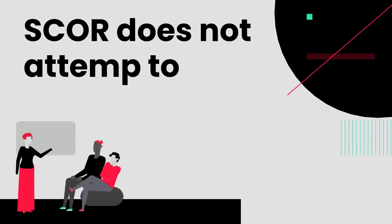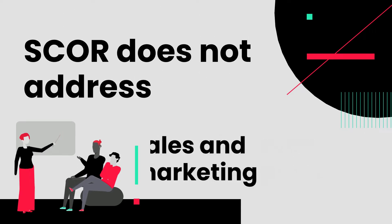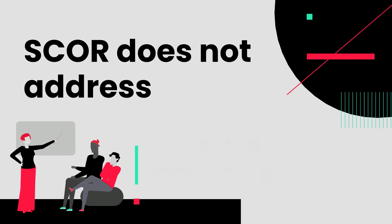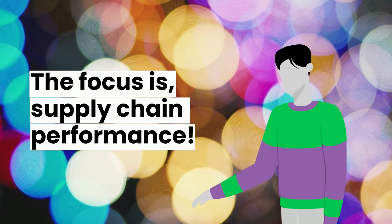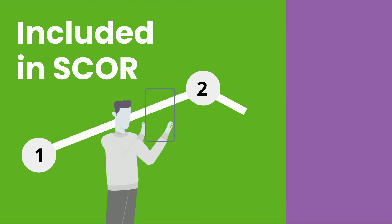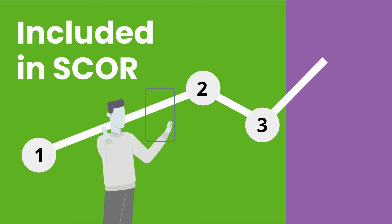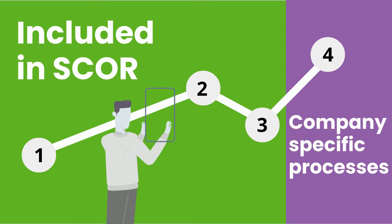SCOR does not attempt to describe every business process or activity. More specifically, SCOR does not address sales and marketing, including demand generation and research and development. The focus is on the supply chain and supply chain performance. Industry-neutral performance and processes are described in three levels, which can be expanded by company-specific detailed processes like working instructions at level 4, 5, 6, or beyond.